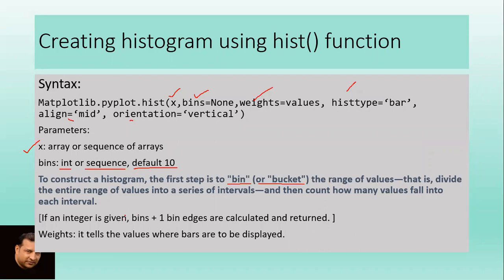To construct a histogram, the first step is to bin or bucket the range of values - that is, divide the entire range of values into a series of intervals. If you have created graphs earlier, you used to take class intervals like 10, 20, 30, 40. Here also we need intervals known as bins, and then count how many values fall into each interval.